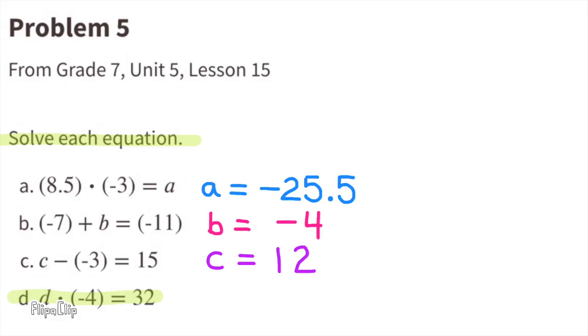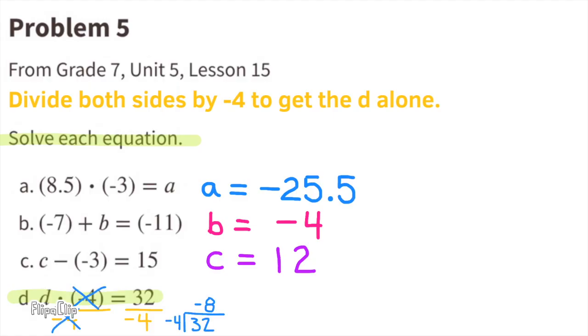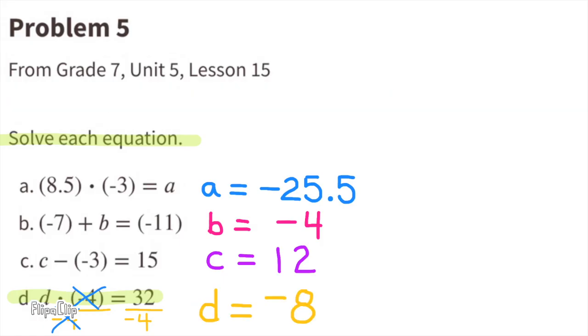D: D times a negative 4 equals 32. We need to divide both sides by negative 4 to get the D alone. D times a negative 4 divided by a negative 4 is D, and 32 divided by negative 4 is negative 8. D equals negative 8.